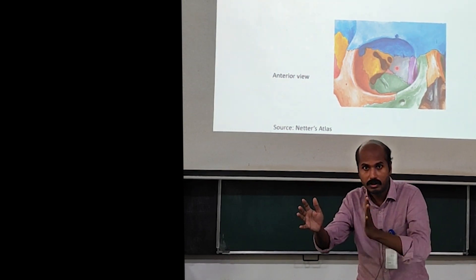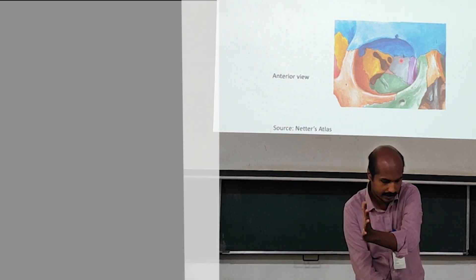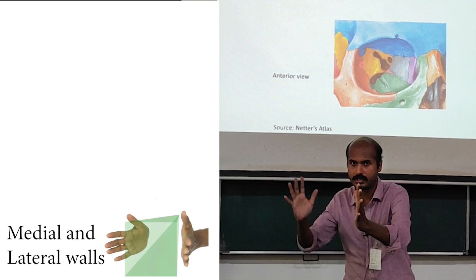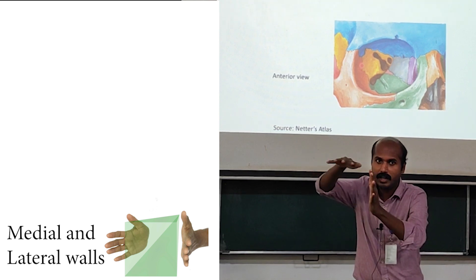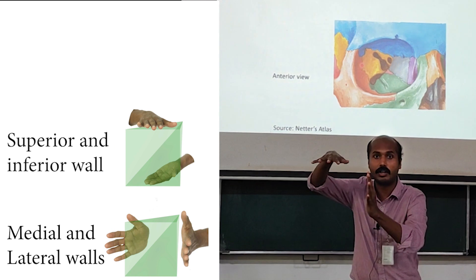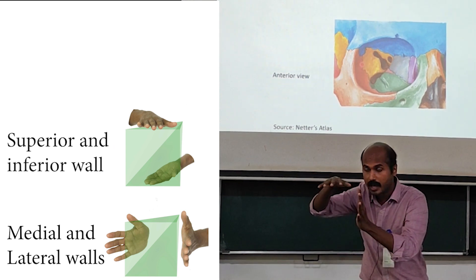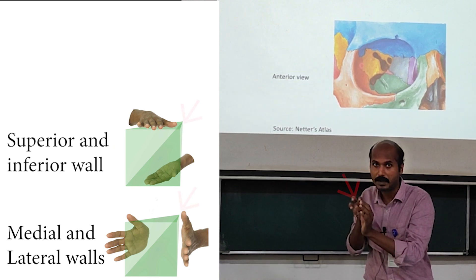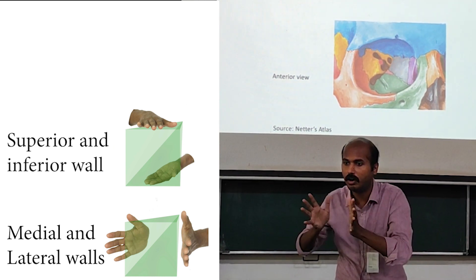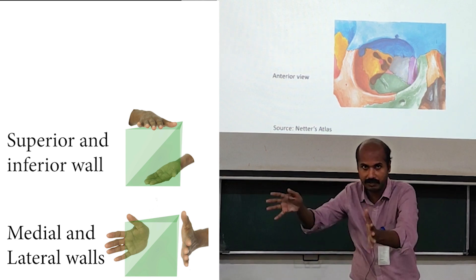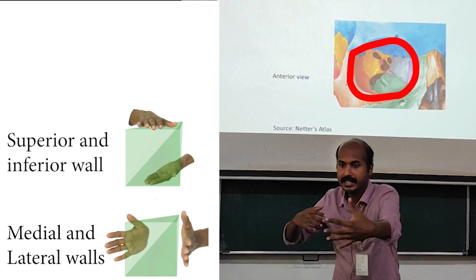The orbit has a medial wall and a lateral wall. You can see the medial wall and the lateral wall are converging toward each other. It also has a superior wall — the roof of the orbit — and an inferior wall, also called the floor of the orbit. All four walls converge posteriorly to form the apex, which is much deeper in the skull. Anteriorly, all these walls diverge outward and form a margin called the orbital margin, which is the base.